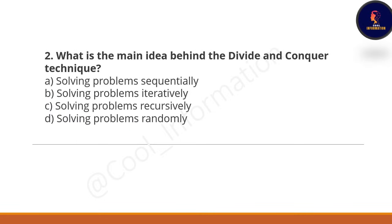Next question: what is the main idea behind the divide and conquer technique? Option A is solving the problem sequentially. Option B is solving the problem iteratively. Option C is solving the problem recursively. And Option D is solving the problem randomly. The correct option is Option C — solving the problem recursively is the main idea behind the divide and conquer technique.